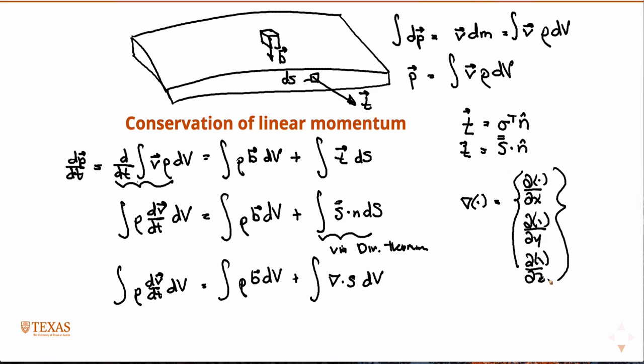And the divergence of a scalar doesn't make sense. You can't, you don't really take the dot product of, the divergence of a scalar is really just the gradient, right? You can't take the dot, really, the dot product of a vector with a scalar, right? That doesn't really make sense.